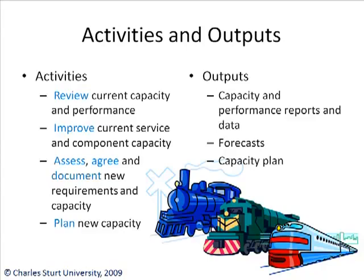Some activities and outputs for the process capacity management. Activities include: reviewing current capacity and performance — are we delivering against requirements? Improving current service and component capacity — if it ain't broken, we can still make it better if it's cost-effective. Assess, agree, and document new requirements and capacity so we don't end up over-promising or under-promising. And we need to plan for new capacity, new resources, and performance changes — we can't make last-minute decisions. Outputs include capacity and performance reports, capacity and performance data, forecasts predicting when new resources will be needed or thresholds met, and the capacity plan, which brings together all changes, new requirements, and improvements.